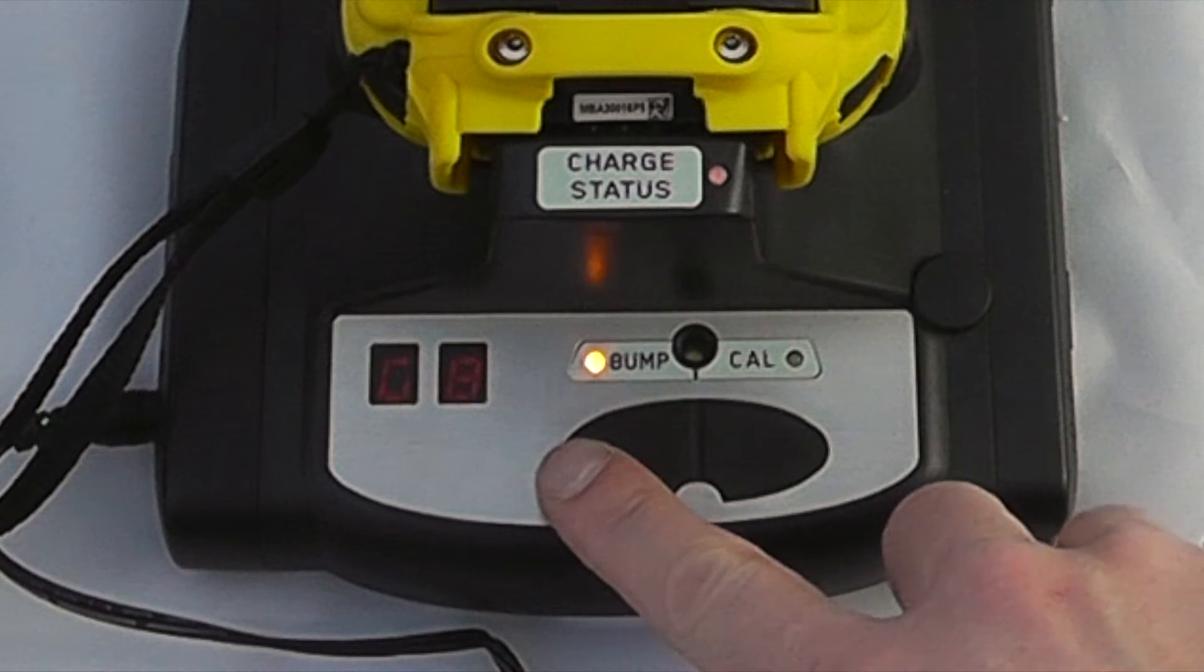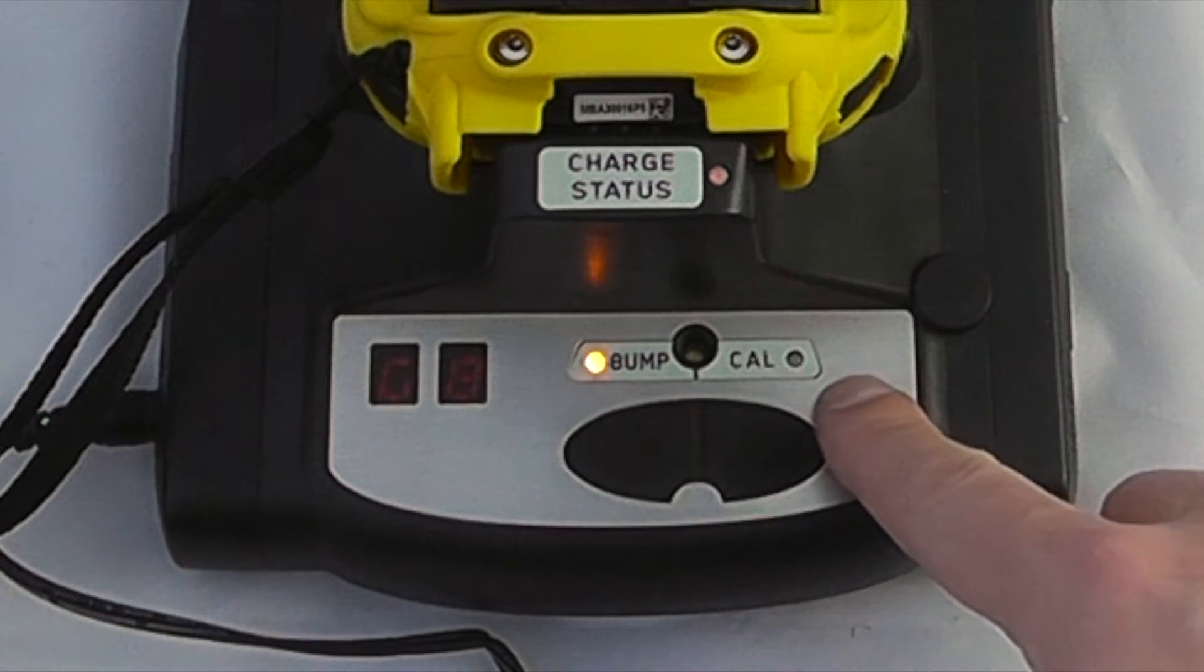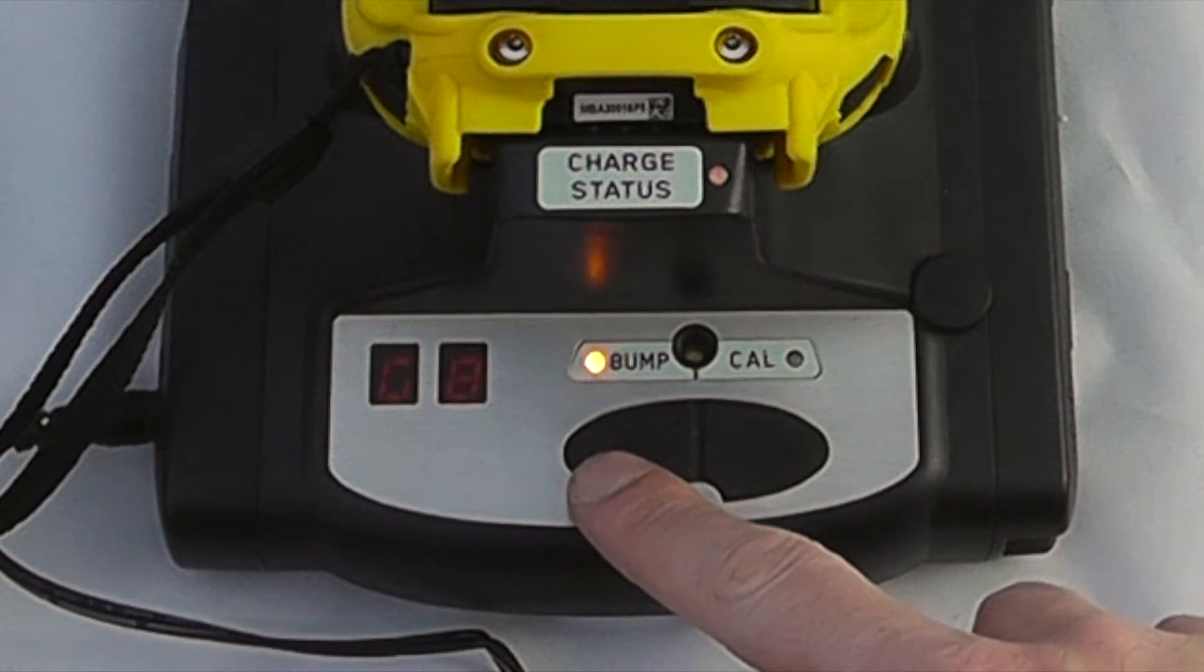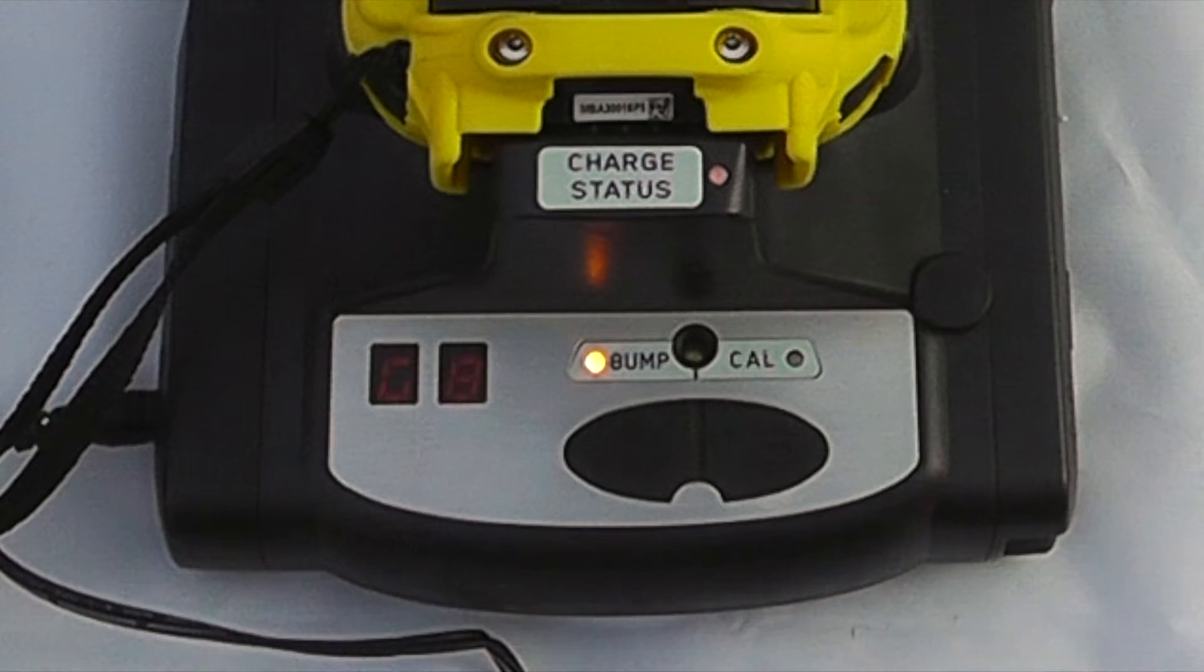This is now going to start up the instrument and it will warm up. When it's giving the two orange lights it's just warming the instrument up and starting things in operation. At the end of that period it's a simple press to bump or press to calibrate.